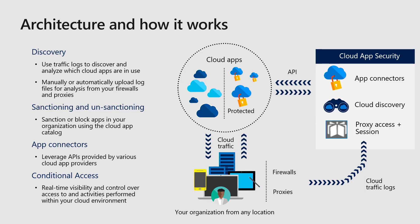Next is the App Connector. Within Cloud App Security, the App Connector uses APIs on the back end to integrate your different third-party applications — such as Salesforce, CRM, or other SaaS applications — and give you insights into user activities within those third-party applications as well.